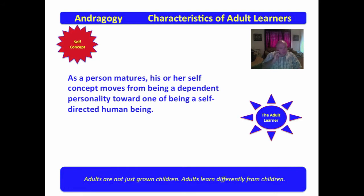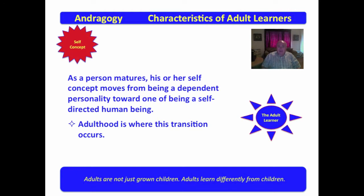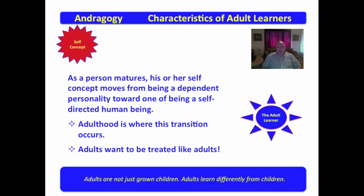As a person matures, his or her self-concept moves from being a dependent personality toward one of being a self-directed human being. Adulthood is where this transition occurs — when we move from dependence to self-direction, that break is where it is generally considered that we become an adult. Adults want to be treated like adults working under self-direction. The concept of self-directed learning is very much at the heart of andragogy. In pedagogy, it's all about what the teacher can tell or give you. But in andragogy, it's very much about what you can learn in a guided environment where you're treated like an adult and given an opportunity to pursue things that are deemed important to you.